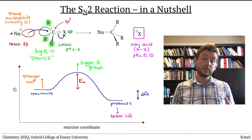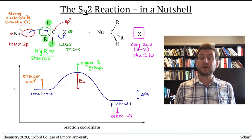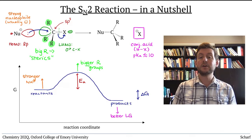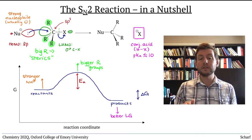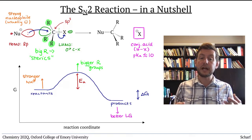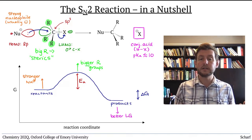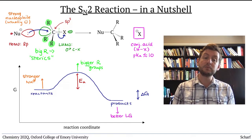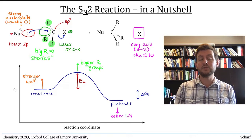In general, methyl and primary leaving groups can undergo rapid SN2 reactions. Secondary leaving groups undergo pretty sluggish SN2 reactions, but they can occur. And tertiary leaving groups don't really undergo SN2 reactions at all.